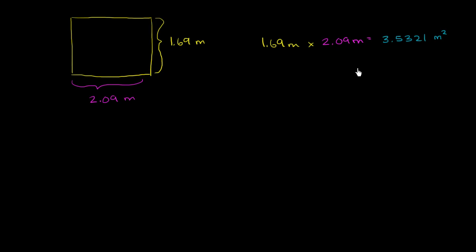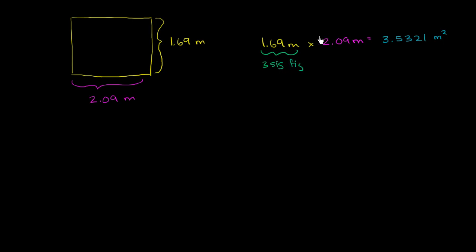The problem here is that when I give you a number with all of these digits behind the decimal point — all of these significant figures — it implies I had a really precise way of measuring the area. When in reality, I was only able to measure to the nearest centimeter. I have three significant figures here, and three significant figures over here.